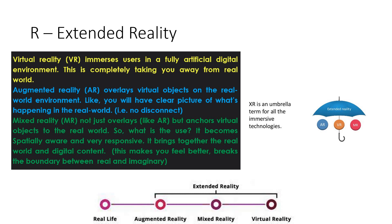We know what VR is, we know what AR is — but XR, Extended Reality, is the umbrella where AR, VR, and MR all come together. Extended Reality is one roof under which we get Augmented Reality, Virtual Reality, and Mixed Reality. Virtual Reality immerses you completely into the experience so you don't know what's happening in the outside world. Augmented Reality overlays digital content while you still see the real world. Mixed Reality gives you a better experience by breaking the boundary between real and imaginary.